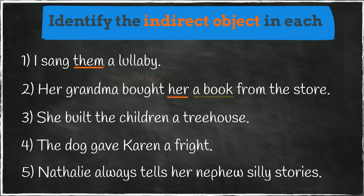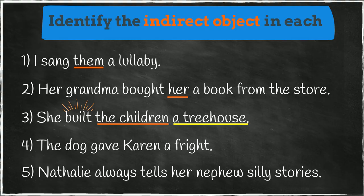Number three. The verb is built. The treehouse is receiving this action, which makes it the direct object. The children receive the direct object. This means the children is the indirect object.